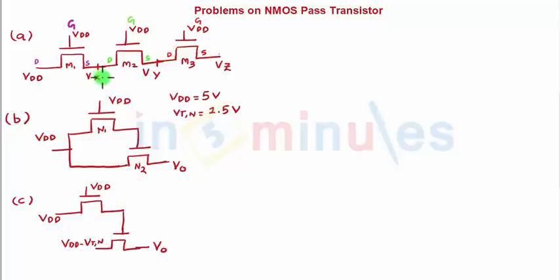Now we are asked here to find out Vx, Vy, and Vz. So let's quickly start for Vx. Let's draw the NMOS transistor - its gate is VDD, its drain is VDD, so Vx would be what we have been asked. We know that the transistor will remain on if Vgs is greater than or equal to Vtn.